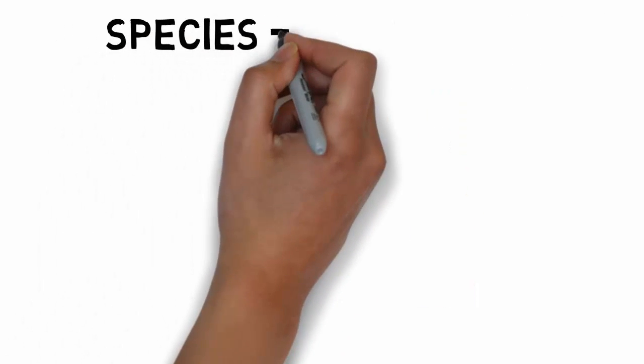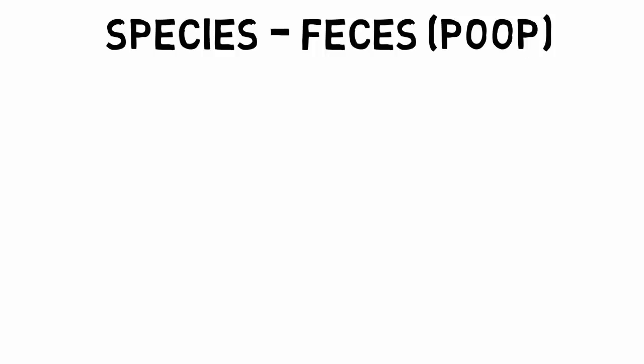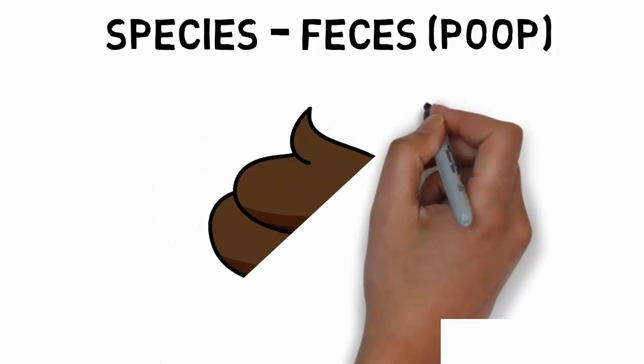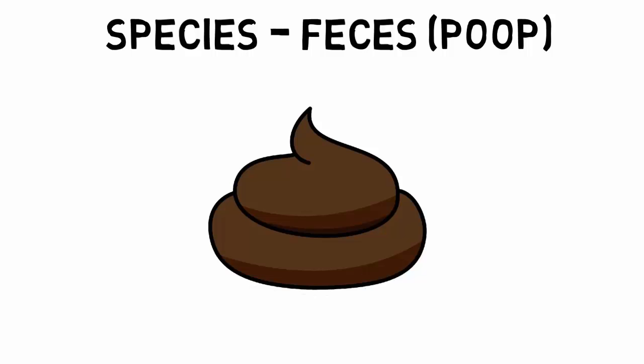And then the very last level is species. Now this image might be a little bit disgusting — but that makes it more memorable. A word that rhymes with species is feces, and feces is just another word for poop.